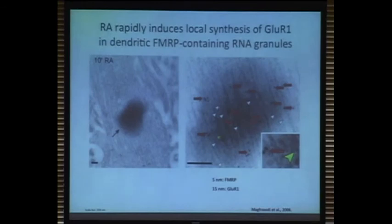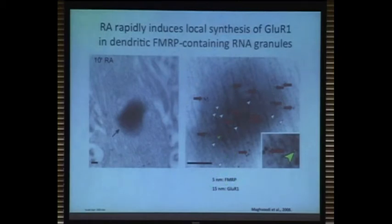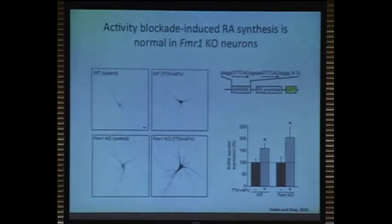So how did we come across Fragile X? In our study of RA-dependent protein translation in neuronal dendrites, we looked at local protein synthesis in these structures called RNA granules. With retinoic acid stimulation within 10 minutes, we see rapid increase in the synthesis of the AMPA receptor subunit GluR1 protein. But in these same RNA granules, we also see numerous FMRP particles — FMRP proteins labeled with 5-nanometer gold particles, highlighted with red arrows. So what is FMRP doing there? We then asked whether in FMRP knockout neurons, RA synthesis is still normal.